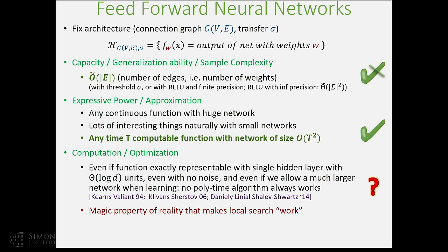There's a big mystery here. Over the last five years there's been huge success actually learning using neural nets, and I would claim we have no understanding of how or why that's possible. There appears to be some magic property of things we encounter in practice that makes them learnable using neural nets — and this property is not simply that they can be represented by a small neural net. This is a long introduction to why, from my perspective, the main mystery here is optimization: how come we can actually train these neural nets.